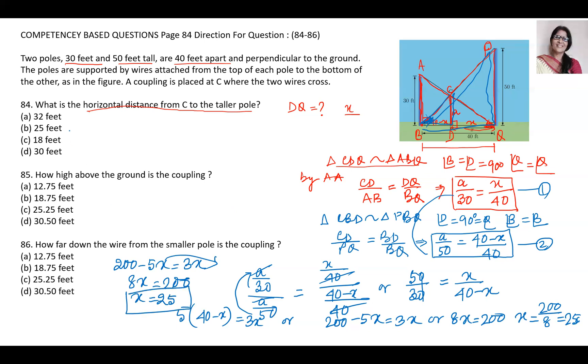So for question number one, B is the answer. DQ equals 25 feet.